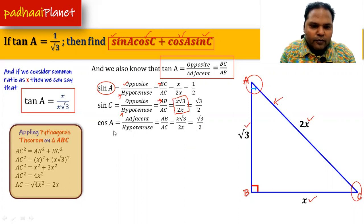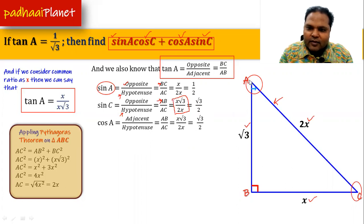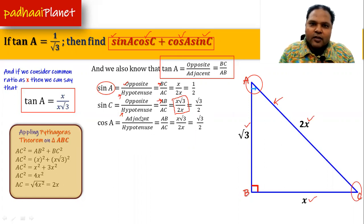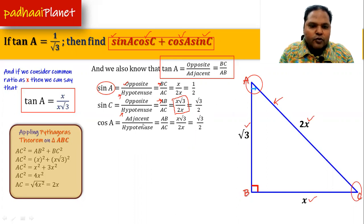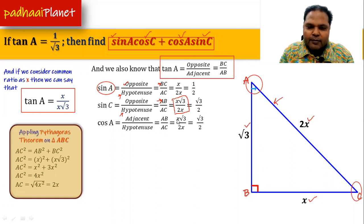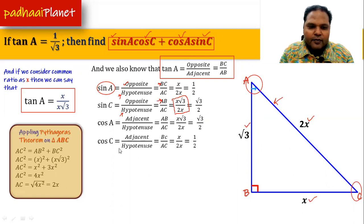Now let's find cos(A). Cos(A) = adjacent over hypotenuse. Since we are working with angle A, the adjacent side is AB and the hypotenuse is AC. Putting in the values of AB and AC gives cos(A) = √3/2. And similarly, we find cos(C) = 1/2.